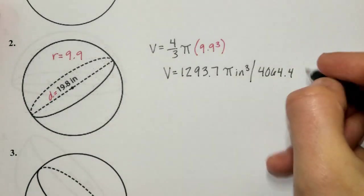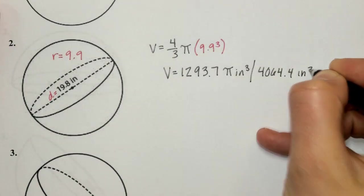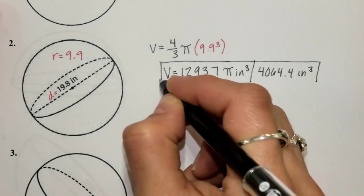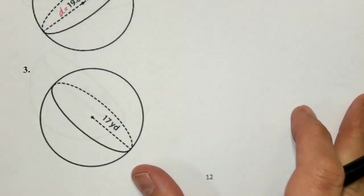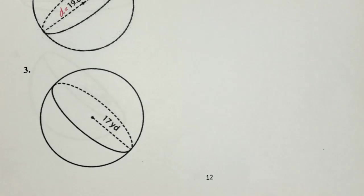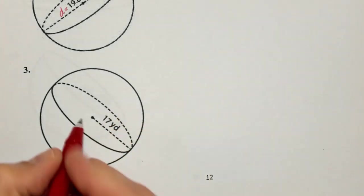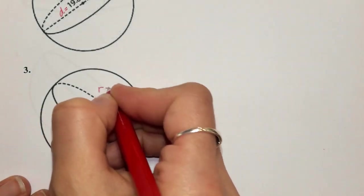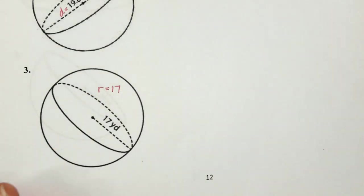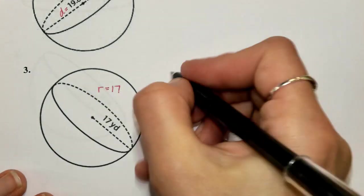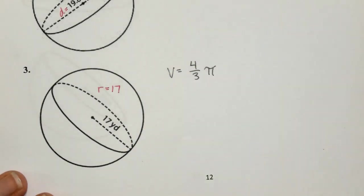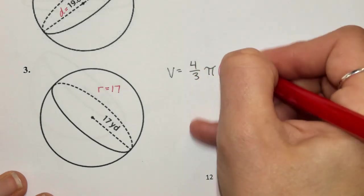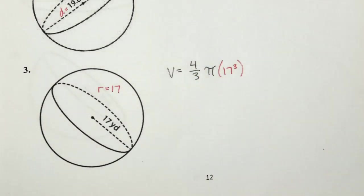I encourage you to look back at what we did with the calculators. For number three, they give us the radius of 17, so: volume equals four-thirds pi times 17 cubed.